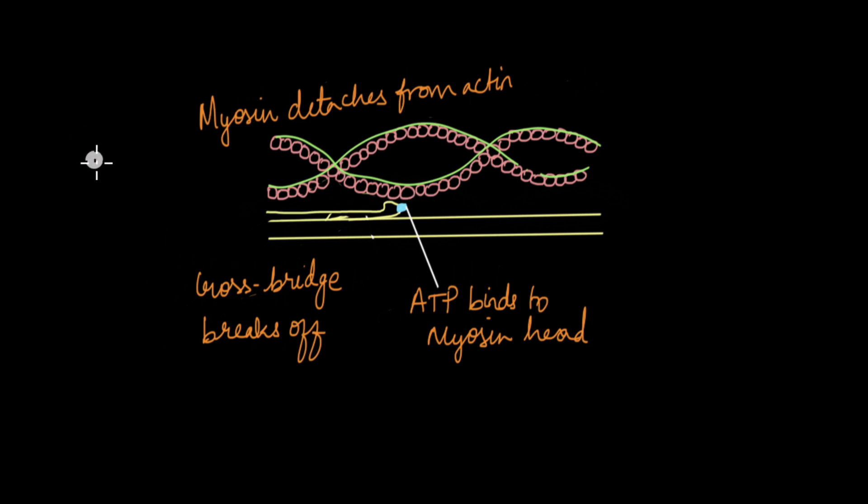So when a person dies and when their muscle is already contracted, the myosin head with ADP and Pi is attached to the actin. For it to detach from actin, it needs ATP. But when a person has died, ATP production in the mitochondria stops.